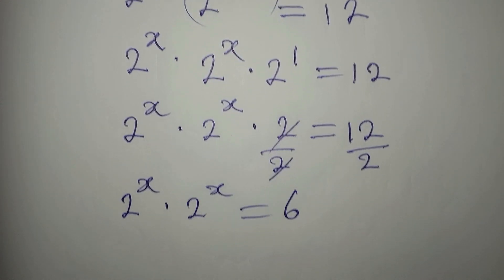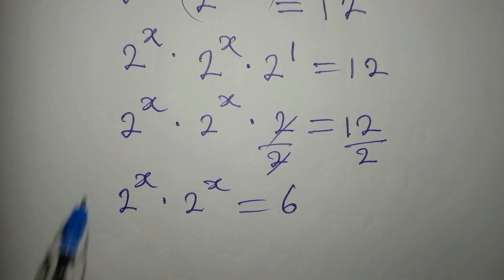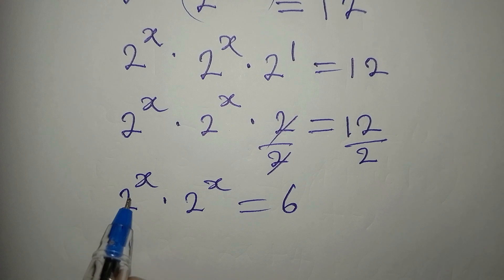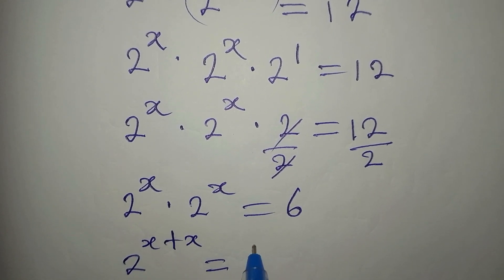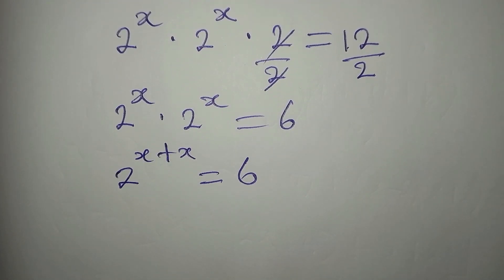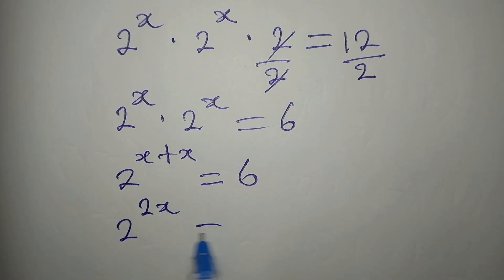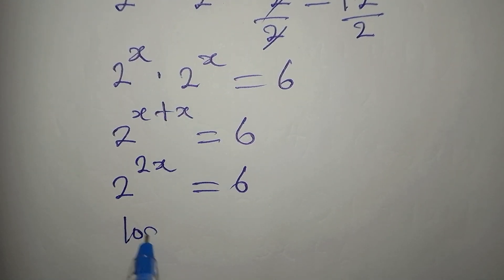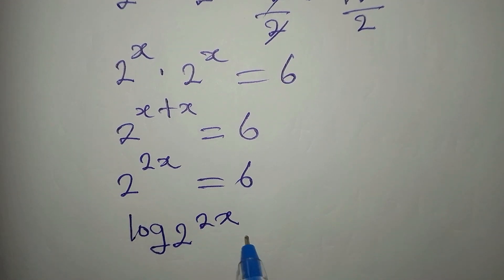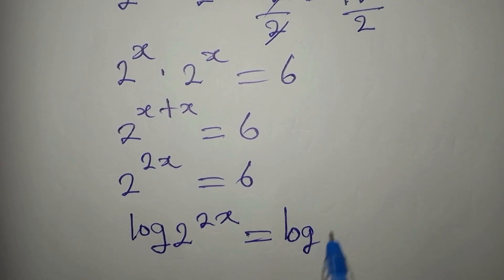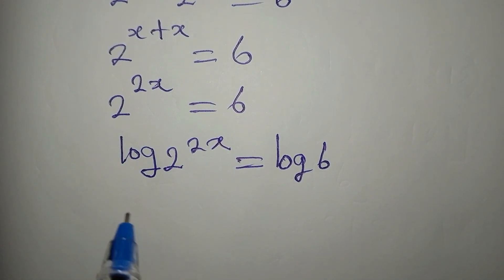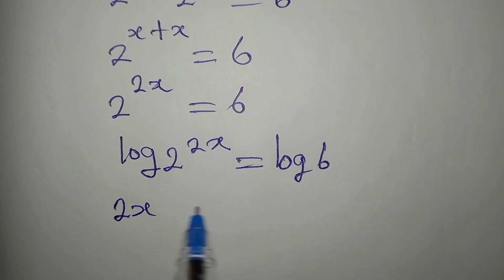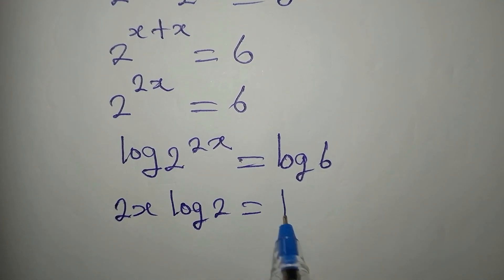I cannot express 6 directly, but because we have the same base we can pick 2 and add the powers. Then we have 2 to the power of 2x equals 6. Now we take the log of both sides: log of 2 to the power of 2x equals log 6. There is a law that says the power can come down in front, so we have 2x log 2 equals log 6.